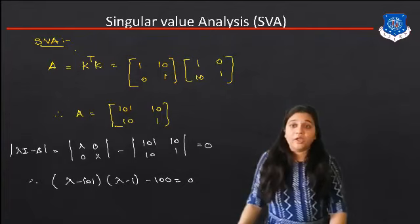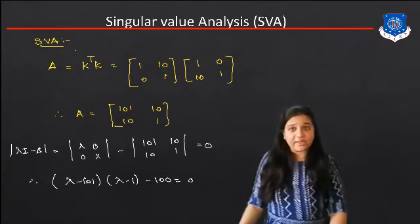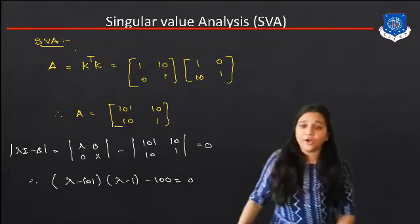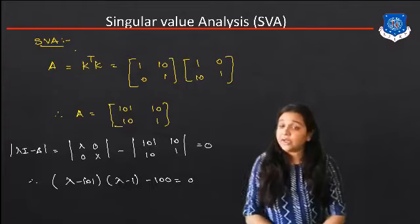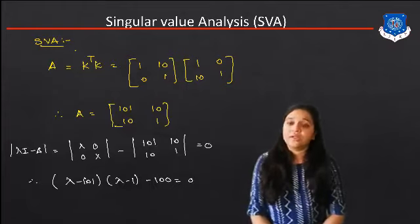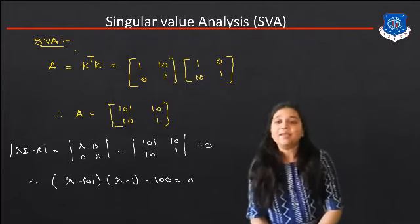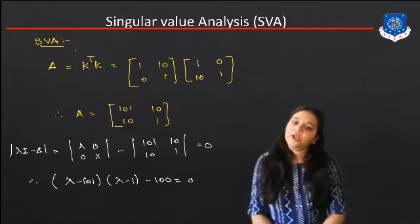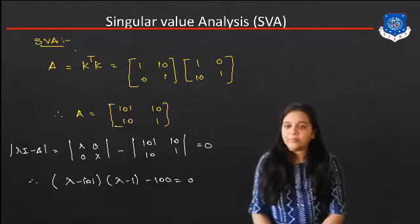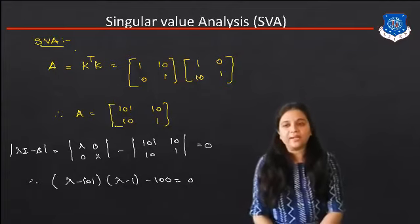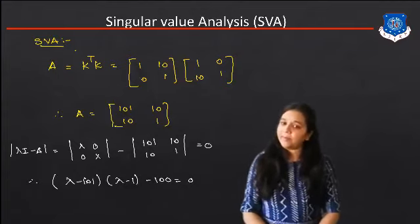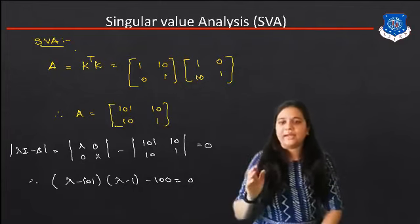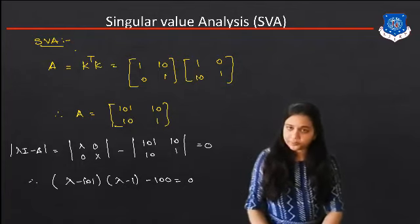To find the SVA value, we have two methods: first, check if it is singular or not; second, find the eigenvalue of this particular system. The equation is: determinant of Lambda I minus A equals zero. Matrix A was found using K transpose times K. The identity matrix I is [1, 0; 0, 1]. So we get Lambda I minus A: [Lambda minus 1, minus 10; minus 10, Lambda minus 101] equals zero.